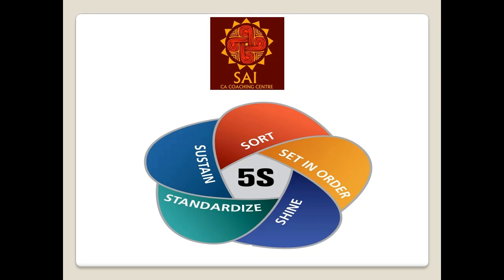As we learnt earlier, an operator is assigned to each cell. He handles the five machines which work in synchronization, so that manufacturing starts one item at a time. Unlike the traditional approach where 5,000 items would be produced by machine 1 and then moved to machine 2, then 3, 4, and 5 — here the operator processes one item in machine 1, carries it to machine 2, then 3, 4, and 5, producing a finished product.